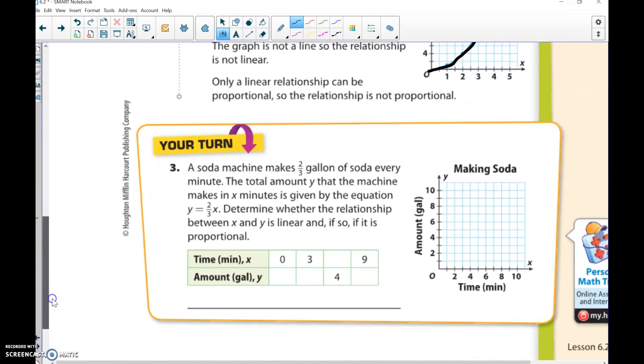I'm looking at number 3 on your turn. A soda machine makes 2/3 of a gallon every minute. The total amount y that the machine makes in x minutes is given by the equation y = 2/3x. Determine if the relationship between x and y is linear, and if so, if it's proportional.